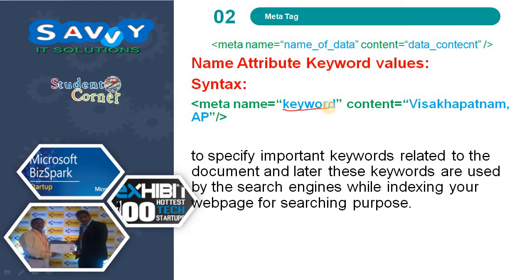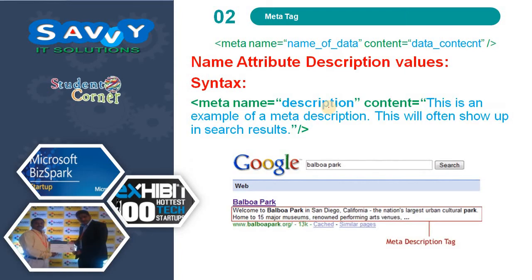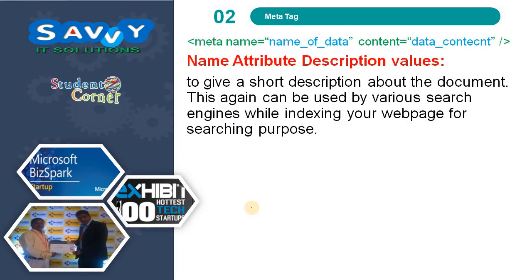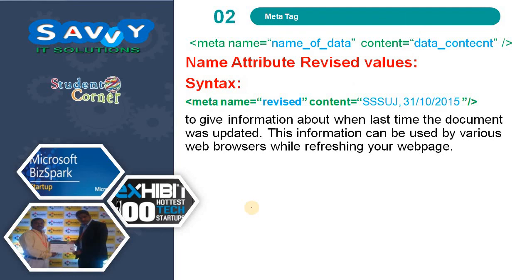The keyword and description tags are used in practice — when we type a search in Google, the description part is what is shown in the search results. The next name attribute value is revisited, which defines when the last updates were made, specified with the keyword revisited.